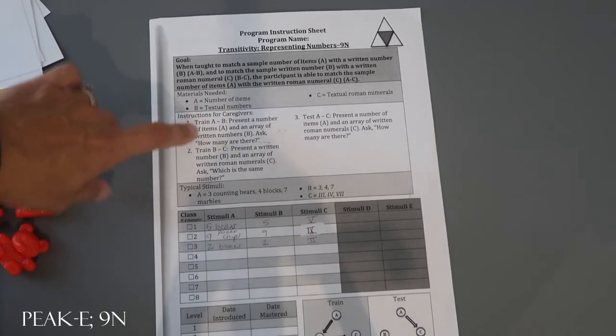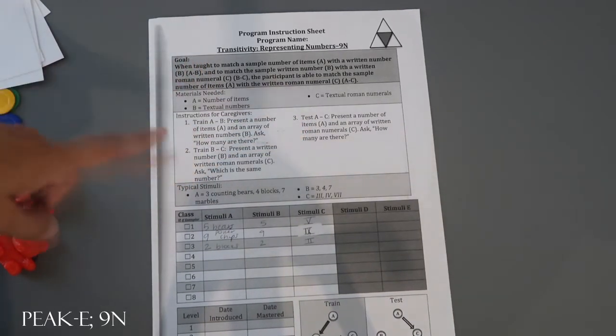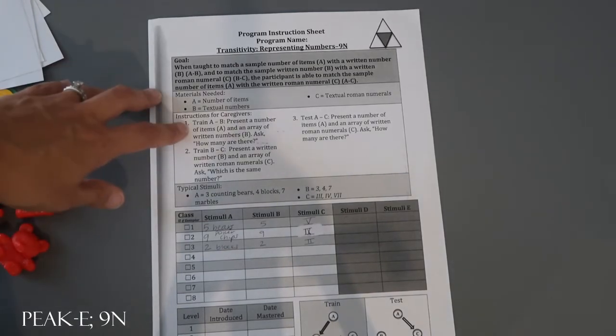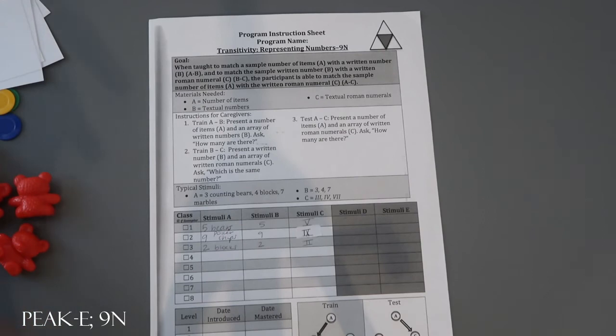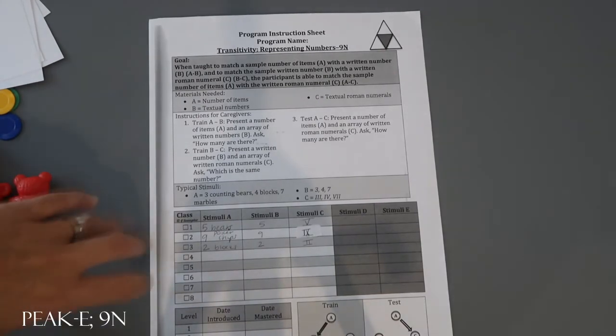You have three blocks: one, two, and three, with ten trials within each. You're going to intermix those different stimuli from A to B, train from B to C, and then test A to C. Once those thirty trials are complete, you've finished this program.